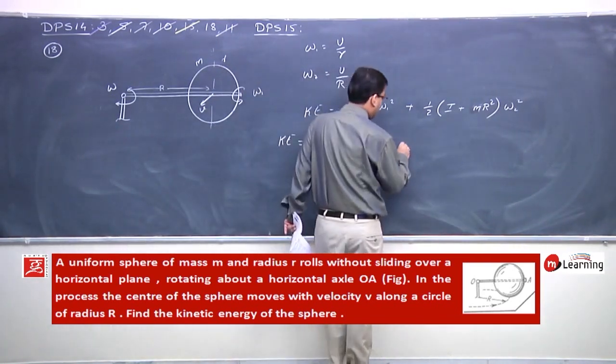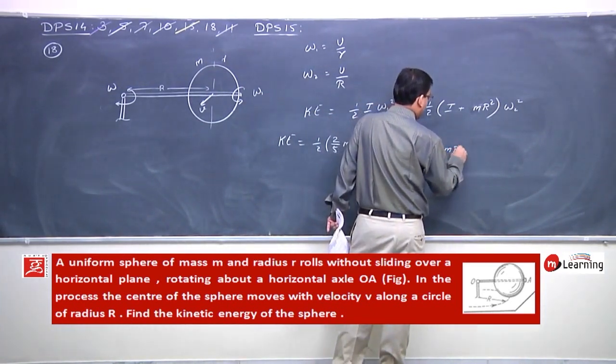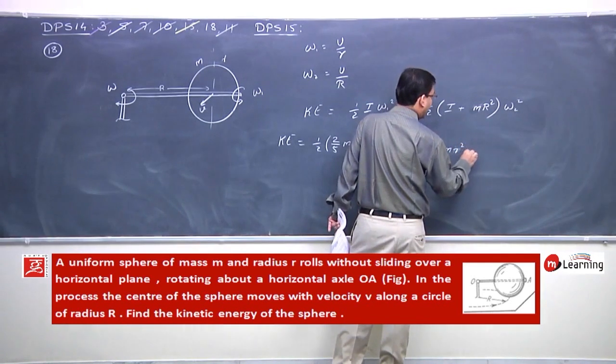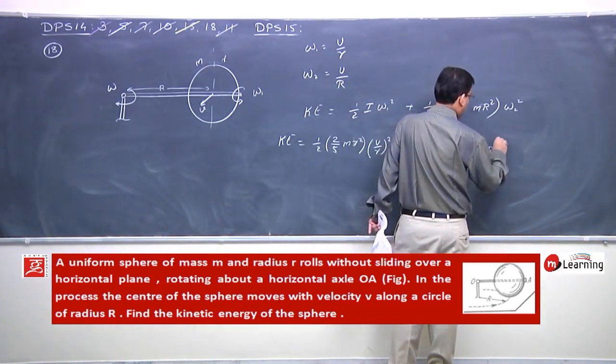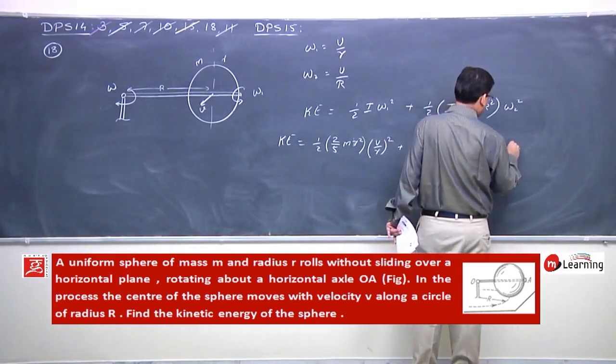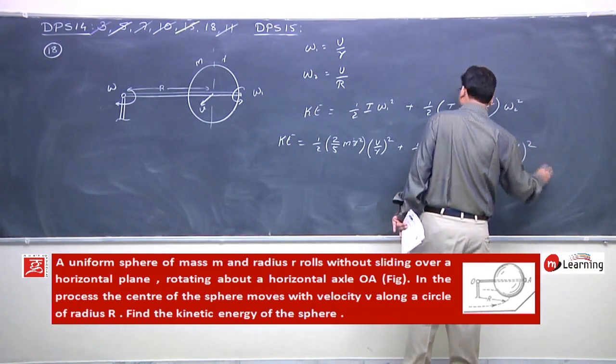Or I ki jagah 2 by 5 m small r square plus m capital R square, parallel axis. Omega 2 ki jagah v by R whole square.